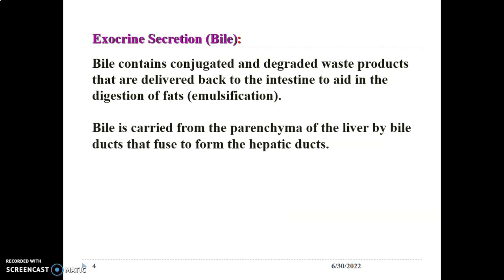Bile is secreted by the hepatocyte and usually contains conjugated and degraded waste products. These conjugated and degraded waste products are secreted back to the intestine and help with emulsification of fat — that is the main function of bile. From the hepatocytes that produce bile, you have canaliculi and ducts that eventually form the common bile duct, which drains bile into the posterior medial part of the second part of the duodenum.